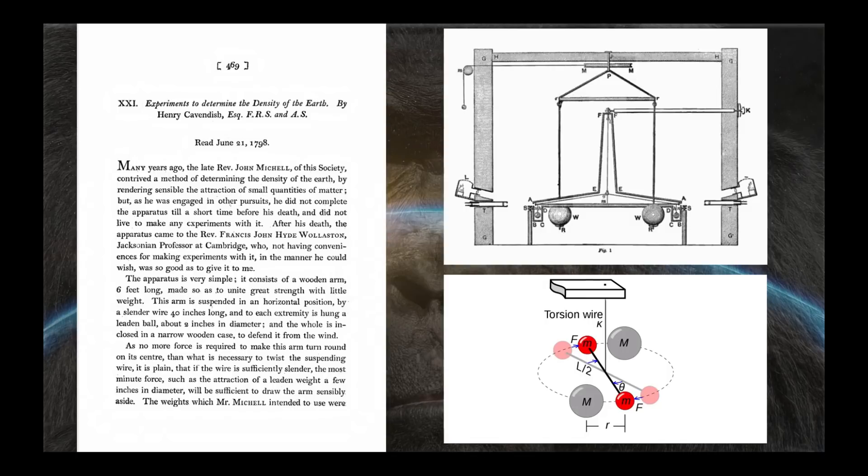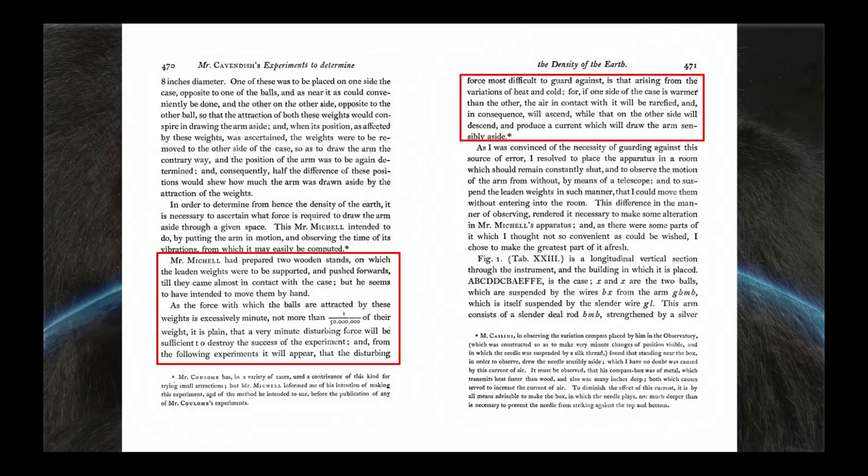If the small beam with the small red masses on it is sitting stationary and we move those two large masses in proximity to the small red ones, we're going to get a gravitational attraction. We're going to get a twisting of that torsion wire. And that's exactly how Cavendish ended up measuring the density of the earth. And I want to read a little bit more of some of the opening parts of the paper. And this part that I'm about to read is the part that gets misrepresented consistently by Sleeping Warrior. So pay attention to this part.